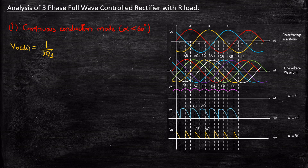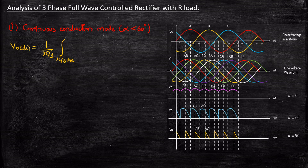The total time period is pi/3 because in the continuous conduction mode waveform, every 60 degrees we see a change in the interval — the output voltage changes after every 60 degrees. So we consider only one cycle, and one cycle corresponds to a total time period of 60 degrees, that is pi/3. The integration starts at pi/6 plus alpha as the lower limit, because firing starts only after 30 degrees — if alpha equals 0, it starts at 30 degrees. So irrespective of alpha, it starts after 30 degrees. The upper limit is pi/6 plus 60 degrees, giving pi/2 plus alpha.